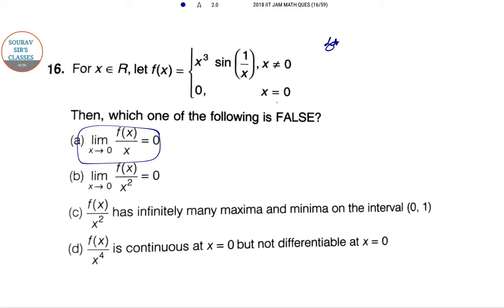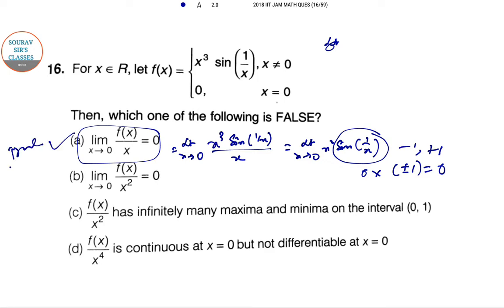So limit as x tends to 0 of f(x)/x is limit x → 0 of x³sin(1/x)/x = limit x → 0 of x²sin(1/x). In this case, sin(1/x) is an oscillating function with values between -1 and +1. So limit of f(x)/x = 0 times oscillatory function of ±1, which always gives 0. So function A is actually true.